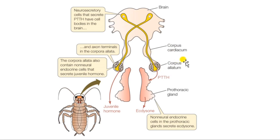Juvenile means immature. Juvenile hormone is needed for insects to mature completely before undergoing metamorphosis or transforming to other stages. It is present in the egg and immature stages to maintain stability and maturation. In the adult stage, juvenile hormone is absent because the insect no longer needs to continue developing. In short, juvenile hormones are responsible for regulating metamorphosis.